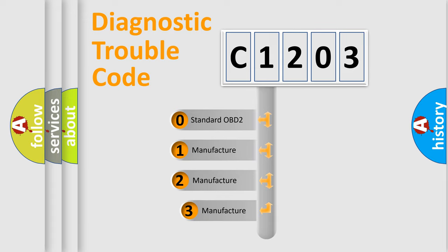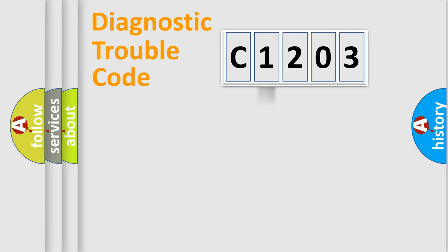If the second character is expressed as zero, it is a standardized error. In the case of numbers 1, 2, 3, it is a manufacturer-specific expression of the car error.